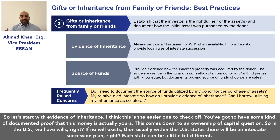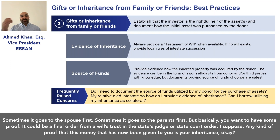Let's start with evidence of inheritance — this is the easier one to check off. You need some kind of documented proof that this money is actually yours. This comes down to an ownership of capital question. In the U.S. we have wills. It could be a final order from a wills, trusts, and estates judge, or a state court order — any kind of proof that this money given to you is your inheritance.